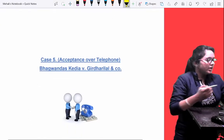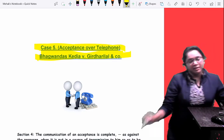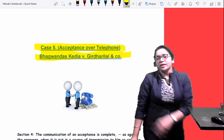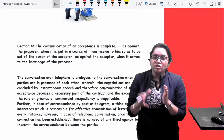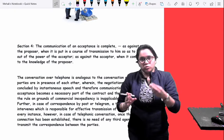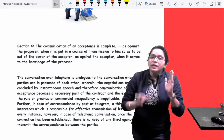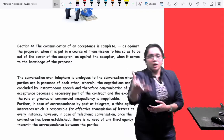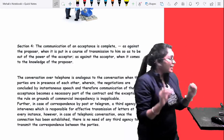The last case is Bhagwandas Kedia v. Girdharilal & Company. It discusses acceptance over telephone. To understand this, you need to understand Section 4. Section 4 says that communication of acceptance must be complete. Communication is two ways. Communication means if I am saying something to you and you heard it, then only there is complete communication. If I am just speaking to the camera, then it is no communication.